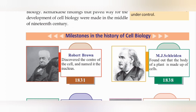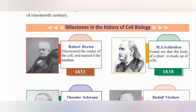Robert Brown discovered the center of the cell and named it Nucleus. M.J. Schleiden found out that the body of a plant is made up of cells.